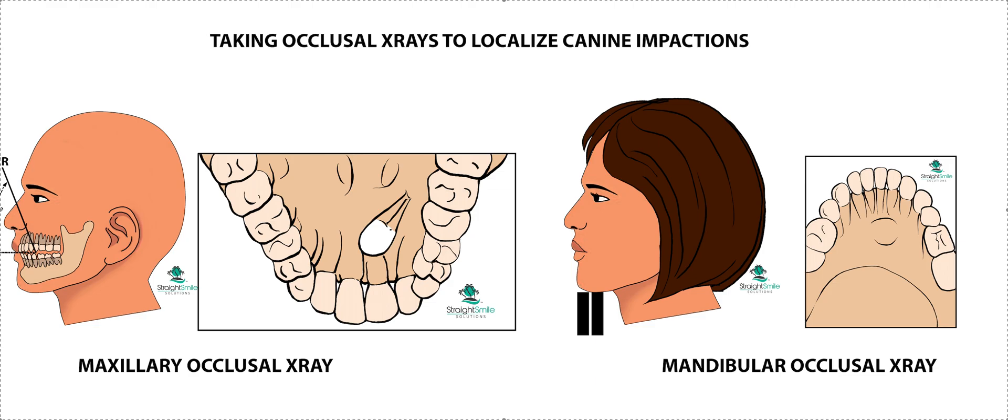You might remember learning the SLOB rule back in dental school — same lingual, opposite buccal — to help localize, but I really actually prefer an occlusal x-ray. For those of you who don't have CBCTs, or maybe don't want to subject your patient to so much radiation with a larger CBCT, you might just want to go back old school and take an occlusal x-ray. So let's talk a little bit about that and why you take it.